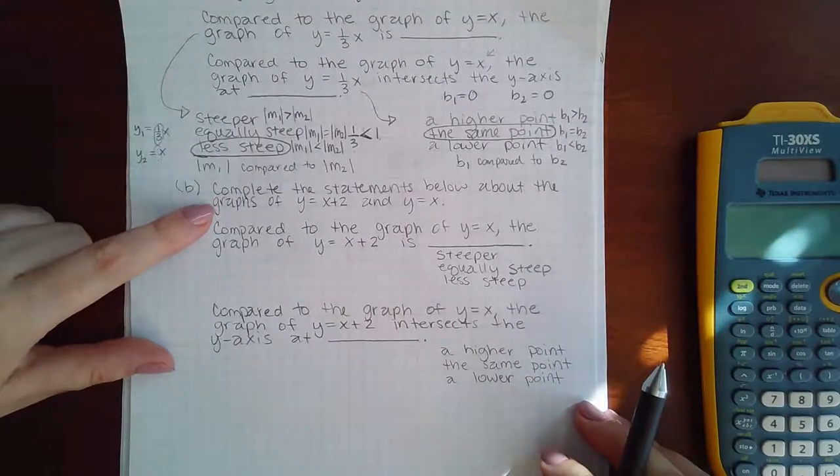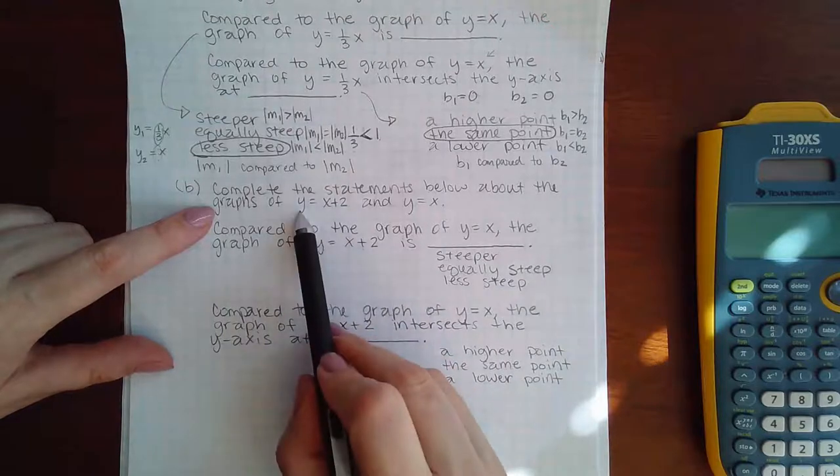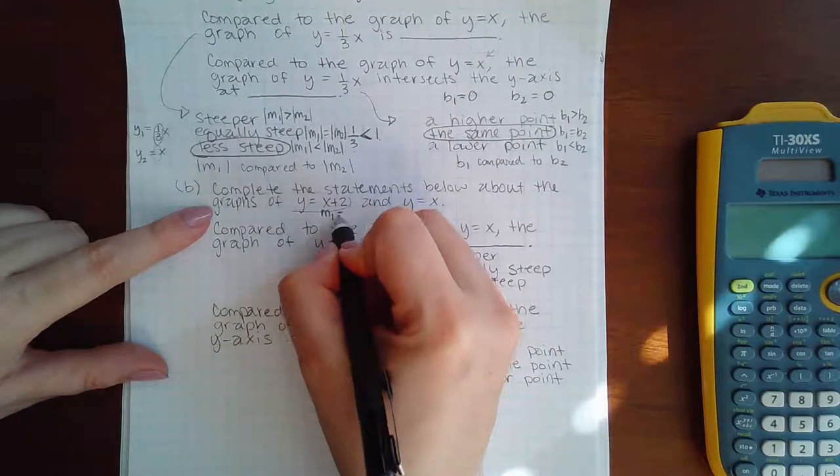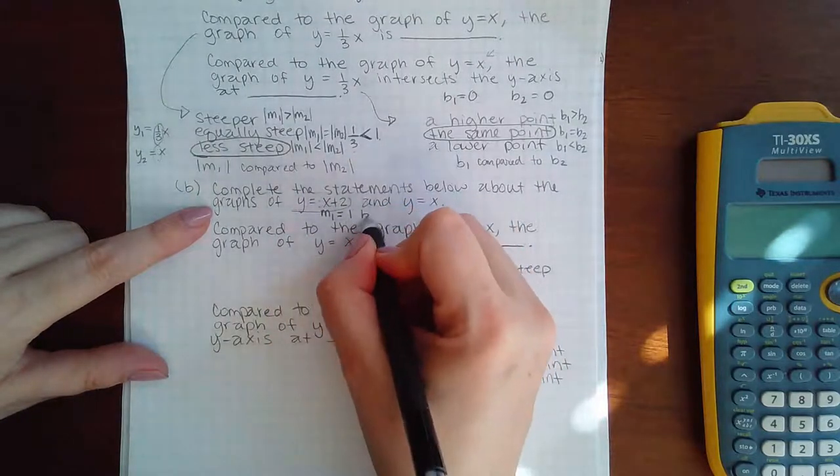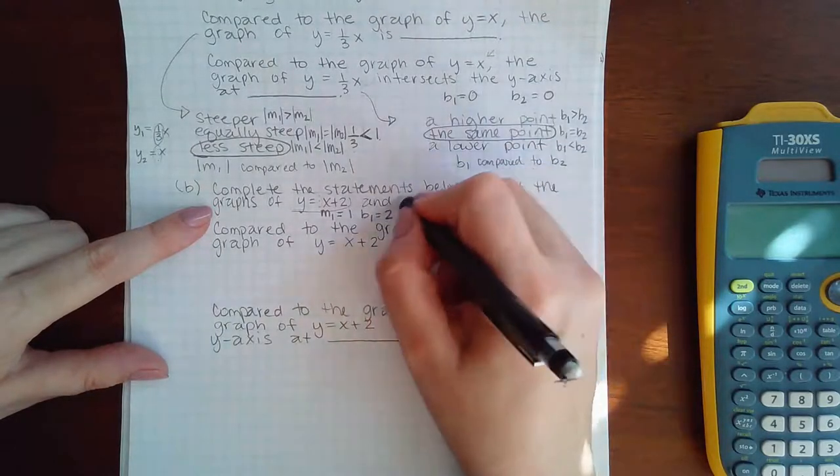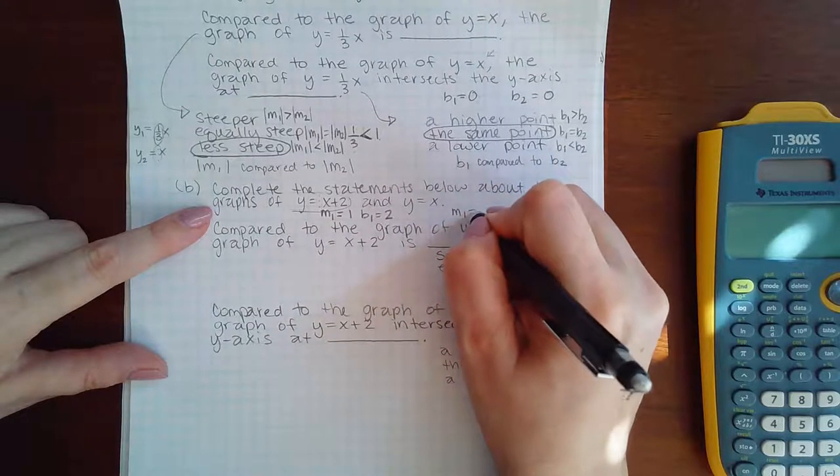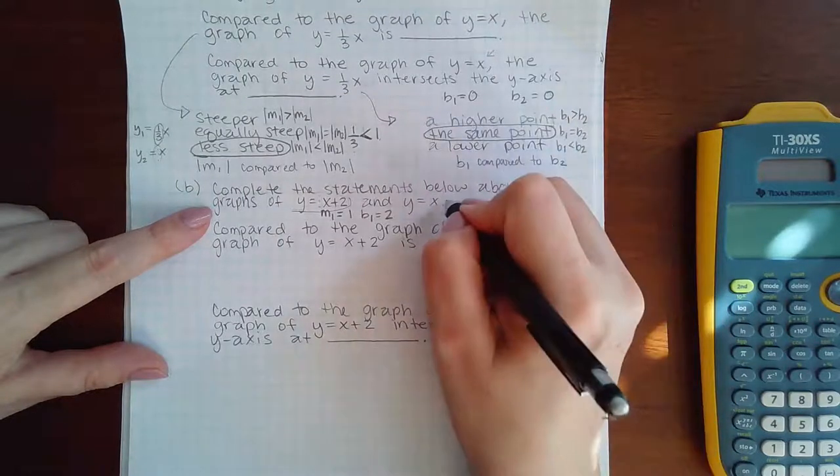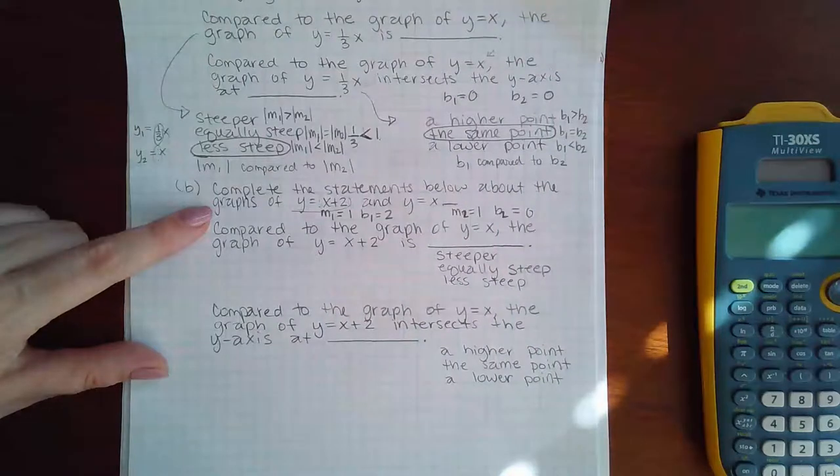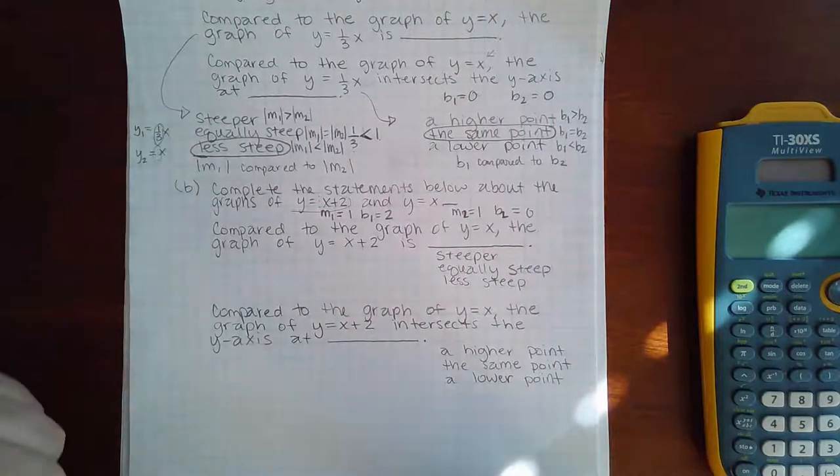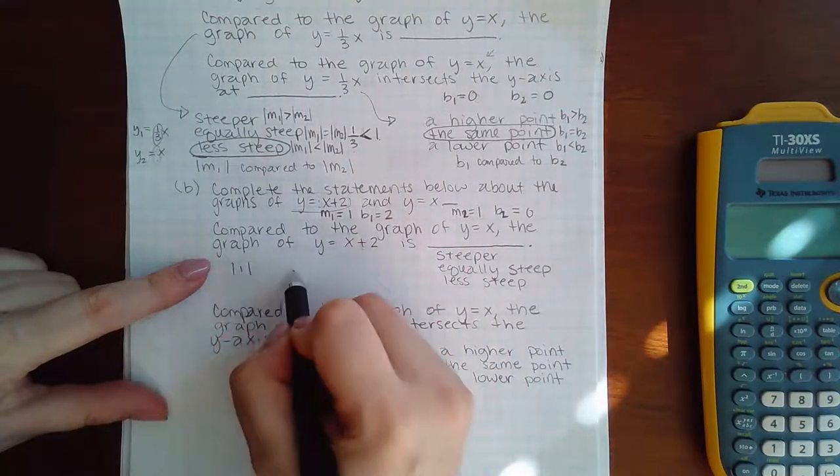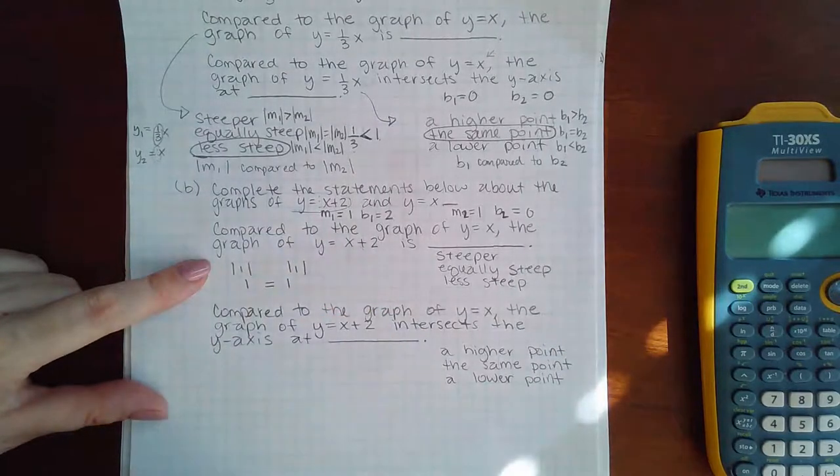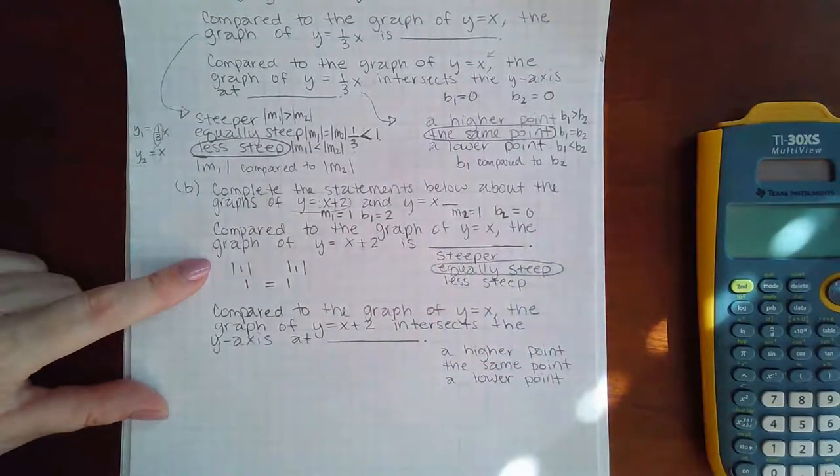So here it says complete the statements below about the graphs of this equation and this equation. Since this was the first one, I'm going to identify m1 which is one, and b1 which is a positive two. This was the second equation they gave me, so m2 is one and b2 is zero because they're not adding or subtracting a y-intercept. And so now I'm going to compare: what is the absolute value of one compared to the absolute value of one? I get one and one, and those are actually equal to one another, so this one is equally as steep as the other.